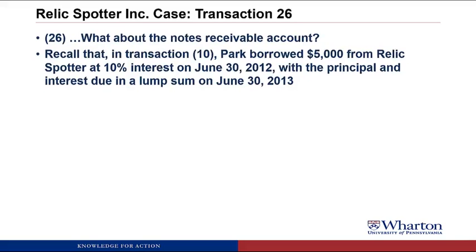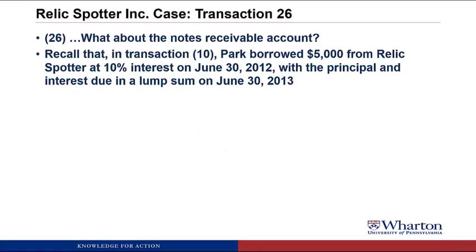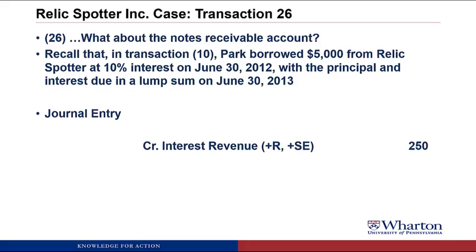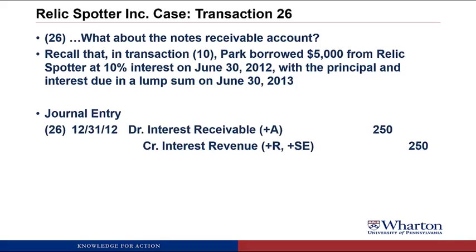Transaction 26. The accountant asked, what about the notes receivable account? Recall that in transaction number 10, Park borrowed $5,000 from RelicSpotter at a 10% interest rate on June 30, 2012, with the principal and interest due in a lump sum on June 30, 2013. We need an adjusting journal entry to recognize the interest revenue that we've earned by providing the money outstanding for six months. So we credit interest revenue for $250. The debit here is going to be interest receivable to represent the fact that Rebecca Park owes us $250 in cash. The $250 comes from $5,000 of principal times the 10% annual interest rate, which equals $500 of interest per year. But it's only been six months, so we take half of that to get $250.